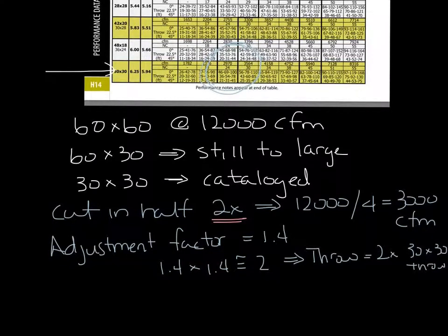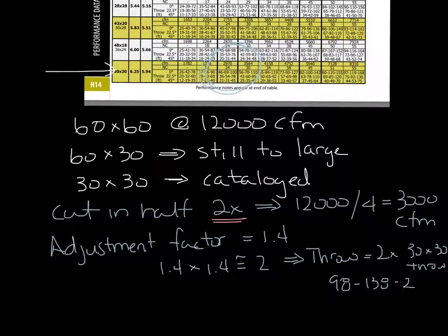The 30 by 30 throws are 46, 69, and 100. So the throw of the 60 by 60 will be 98 at 150 feet per minute, 138 at 100 feet per minute, and 200 at 50 feet per minute.